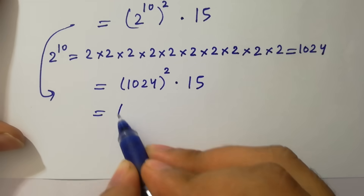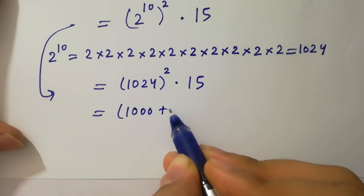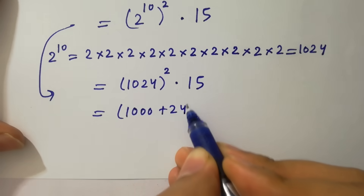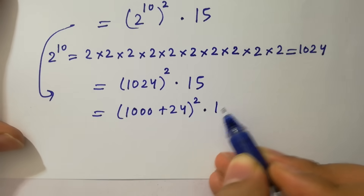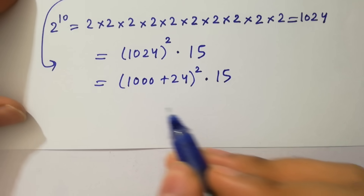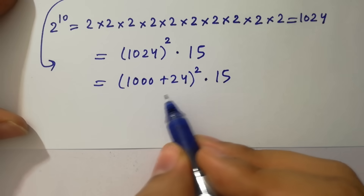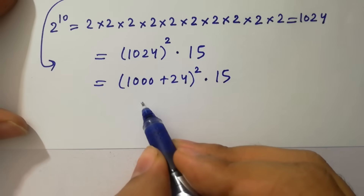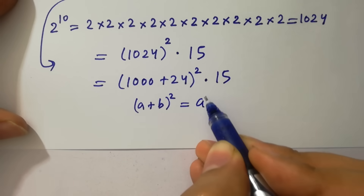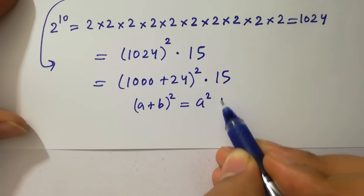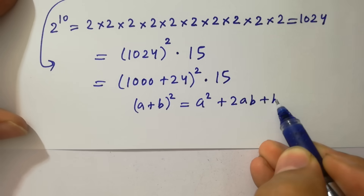1024 is the same as 1000 plus 24, so we have (1000 plus 24) to the whole power 2 times 15. We apply the formula for (a plus b) whole squared, which equals a squared plus 2ab plus b squared.